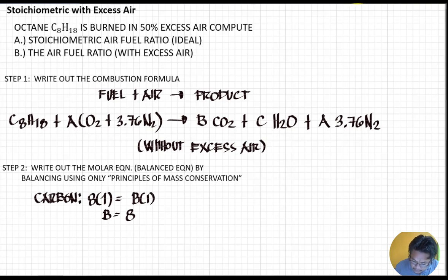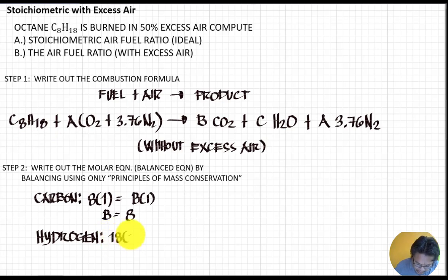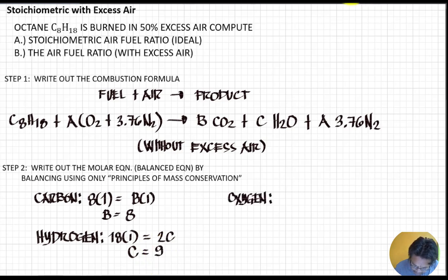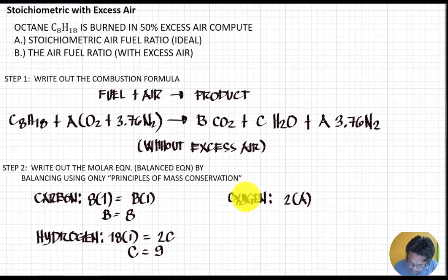Next, for hydrogen: we have 18 hydrogens in C8H18, multiplied by one mole of fuel. On the product side, we have 2 times c for the hydrogen coefficient, so c equals 9. Next, for oxygen: we have 2 times 'a' on the reactant side.